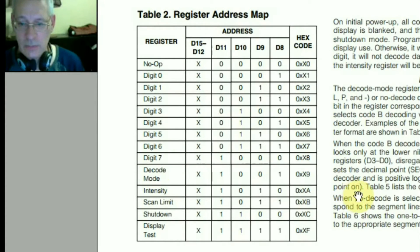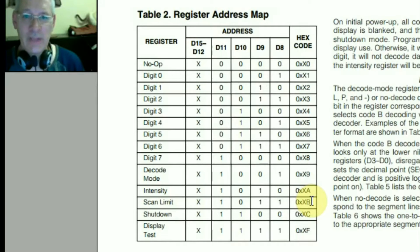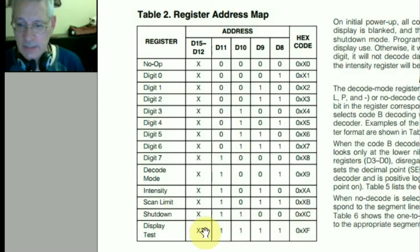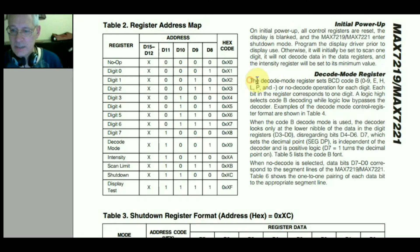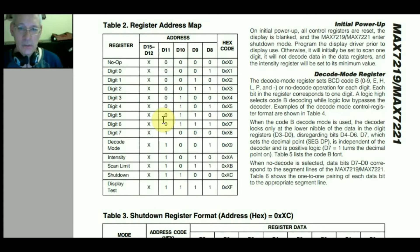There's also decode mode, intensity, scan limit — which controls how many digits are displayed at a time — and shutdown for on/off. Display test is interesting because that's likely what we saw when we first turned it on. The decode mode register sets BCD Code B, covering digits zero to nine, E, H, L, P, and hyphen. That's very useful because it means we can send a BCD value per digit — putting a '2' or '4' — without having to specify all the individual segments.